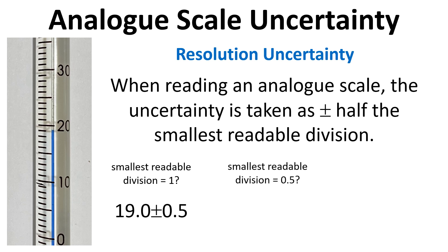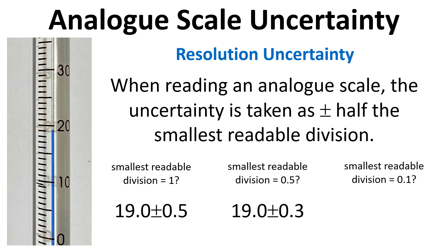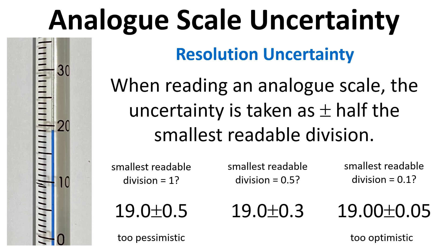We might say we could read the thermometer to 0.5 degrees C, giving 19 plus or minus 0.3 — it's 0.3 because half of 0.5 is 0.25, rounded to one significant figure. Someone else might say they can read it to 0.1, giving plus or minus 0.05, but that's probably a bit too optimistic. The 0.5 may be too pessimistic and 0.05 too optimistic, so plus or minus 0.3 is a reasonable judgment.